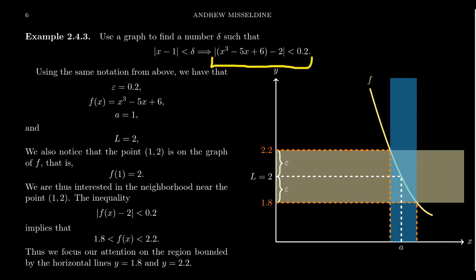This package is pretty tightly bound, so let's try to unravel it. When it comes to these types of statements with epsilons and delta, I'd recommend looking at the latter half first. We have x cubed minus 5x plus 6 in parentheses — this is our function f of x. Our function has a target value of 2, which is our L value, and less than 0.2 is our epsilon.